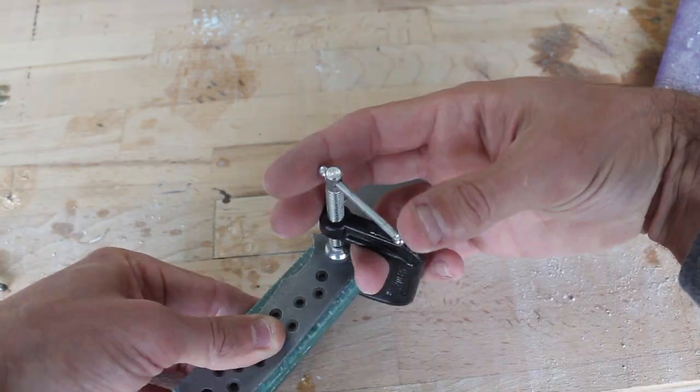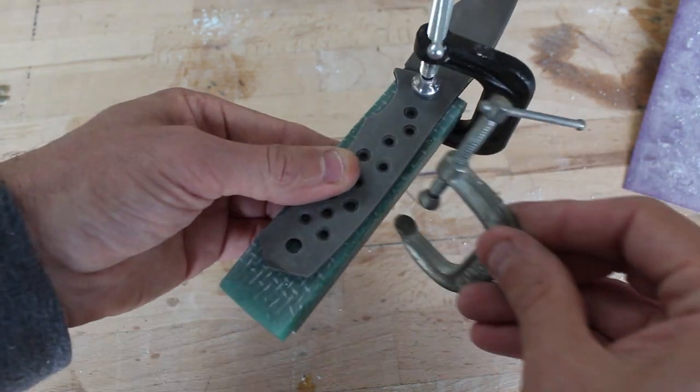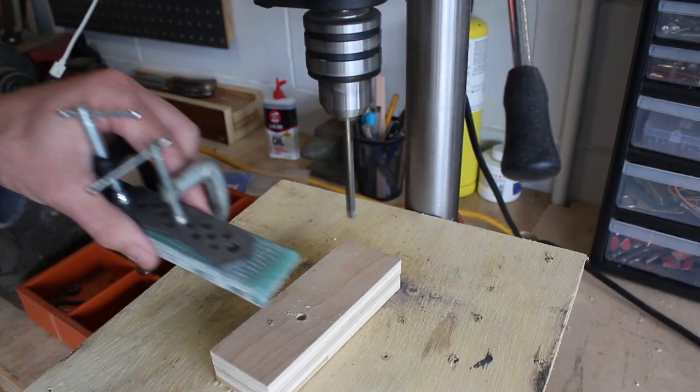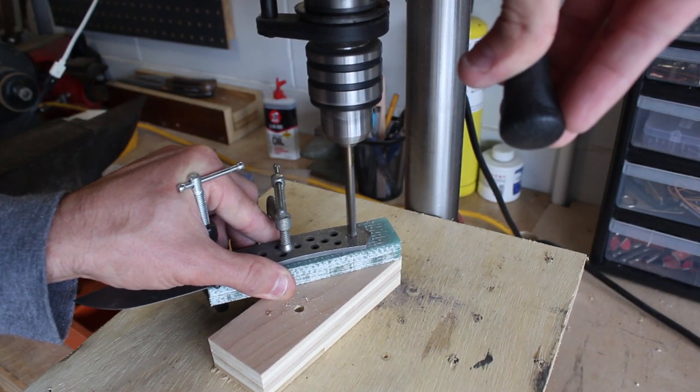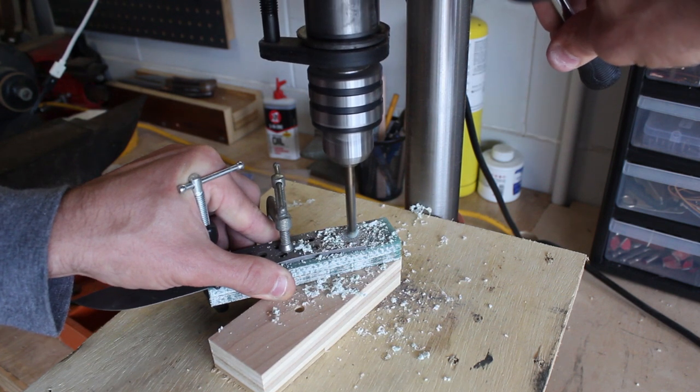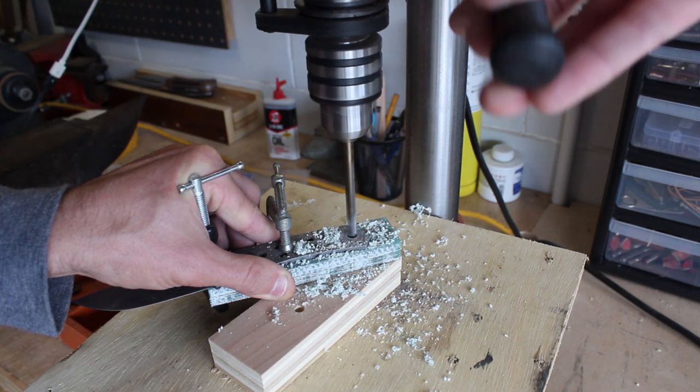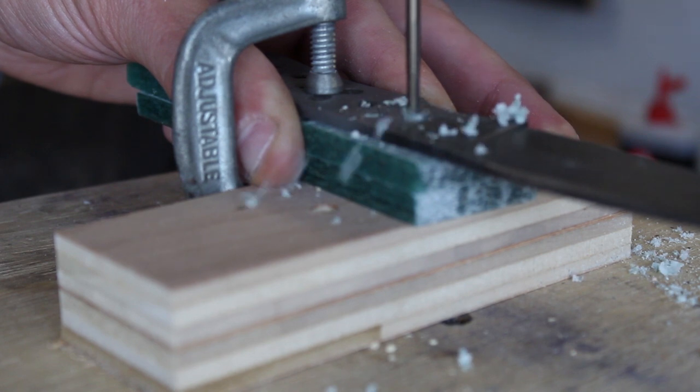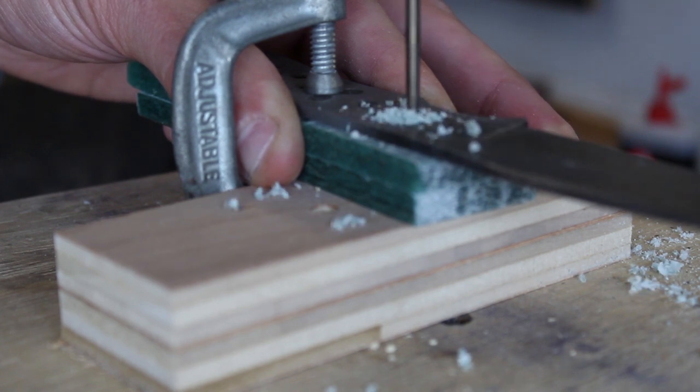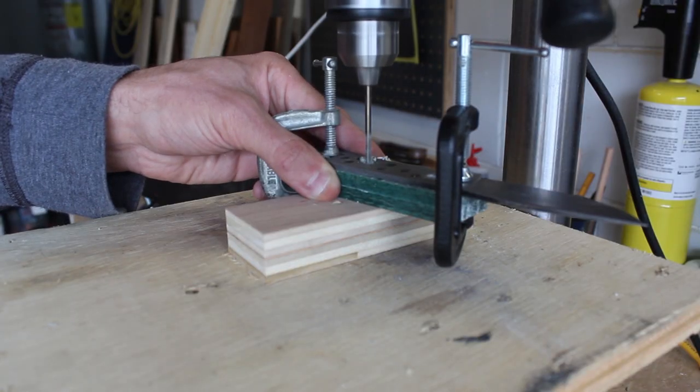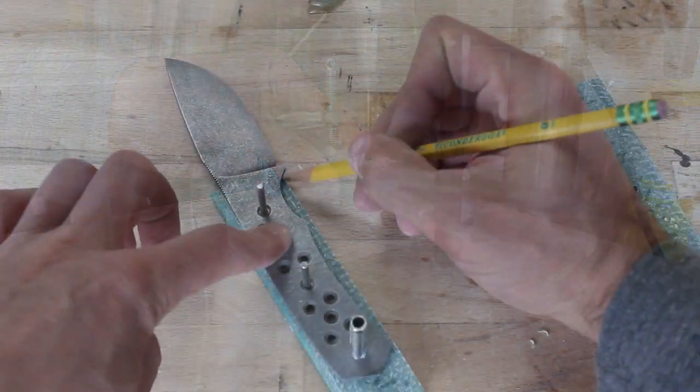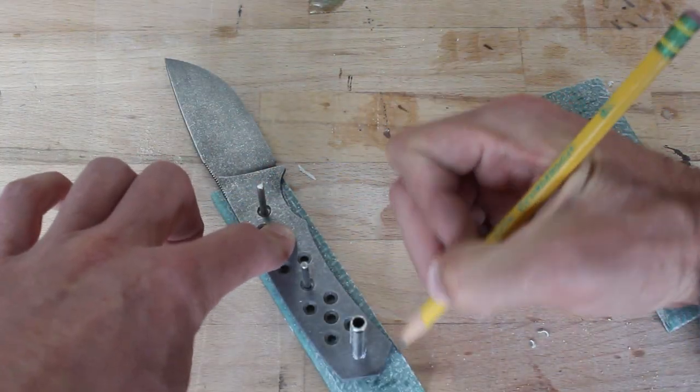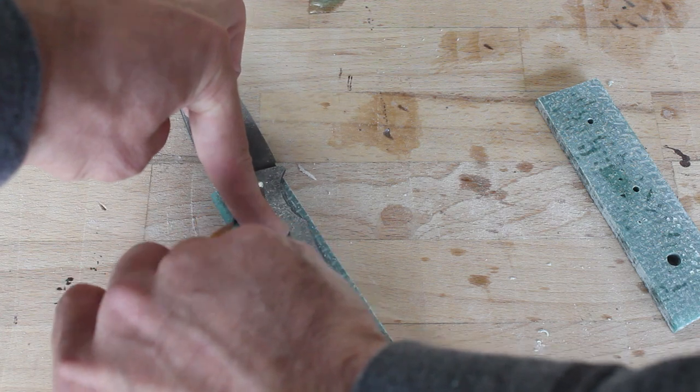Now I will clamp the scales to the knife and drill the pin holes. Now mark out the scales and remove the extra material before gluing it to the knife.